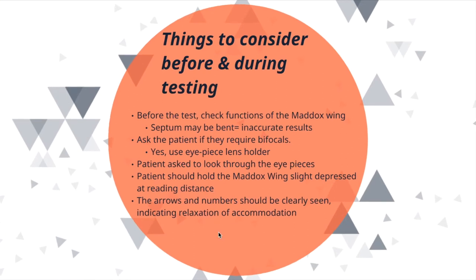Things to consider before and during testing: Before the test, check the functions of the Maddox wing — sometimes the septum is bent and may not cover the intended view, which can give inaccurate results. Ask the patient if they require bifocals; if yes, use the eyepiece lens holder. The patient should hold the Maddox wing in a slightly depressed position at around 15 degrees and at reading distance. The arrows and numbers should be clearly seen by the patient, indicating relaxation of accommodation. If not, incorrect measurements can be recorded.